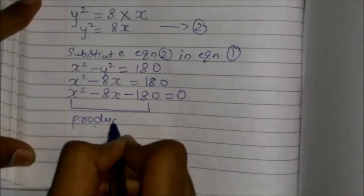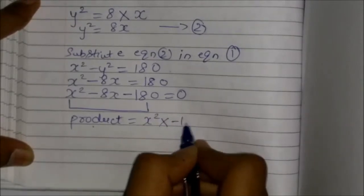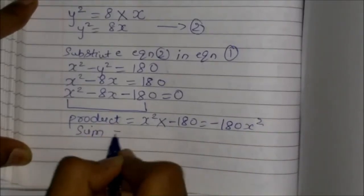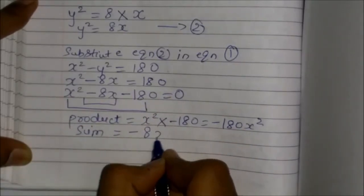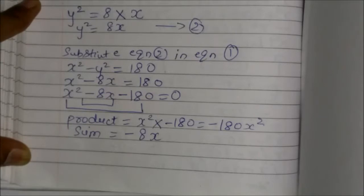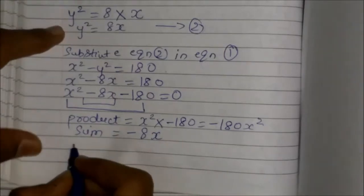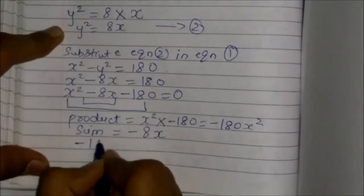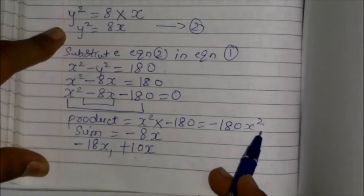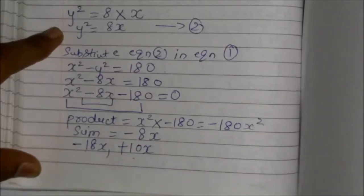Now we need to factor this. The product of the first and last terms is x² times minus 180, which is minus 180x². The sum must equal minus 8x. We need two terms that multiply to give minus 180x² and add to give minus 8x. Those two terms are minus 18x and plus 10x.